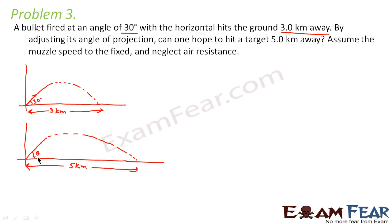So the question is asking you, is it possible that by changing the angle to some other angle, you can make this bullet hit the ground 5 kilometers away from the origin? So how do we do that? And also it is told that assume the muzzle speed to be fixed and neglect air resistance.